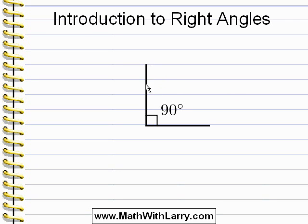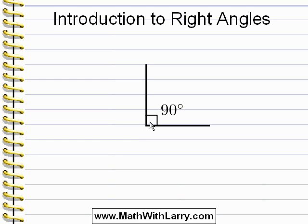Take a look at the picture here. We have a vertical line and a horizontal line that intersect. We can say that these two lines form a right angle. We can also say that these two lines are perpendicular, and you'll learn more about that later. We use this special square symbol here basically just to show that these two lines would form the corner of a square or a rectangle.